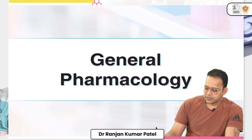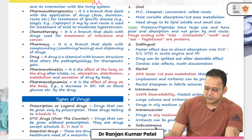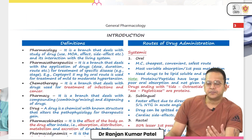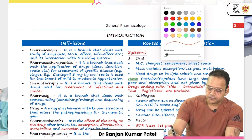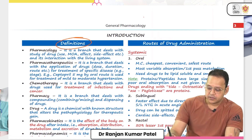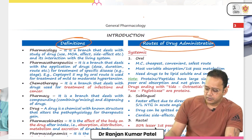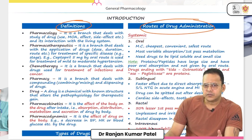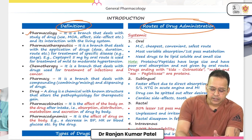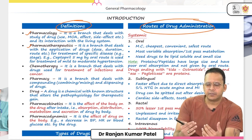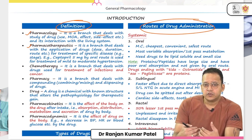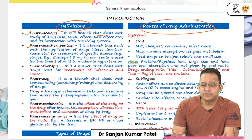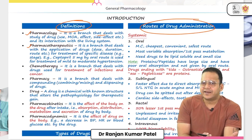Let me give you a demo of the color coding system. Starting with general pharma — most MCQs come from pharmacokinetics and pharmacodynamics. The book uses three colors: black, blue, and red. Black is used for terms or introductory content like mechanism of action or side effects. Blue is used for topics that have not yet been asked in the exam, or are rarely asked.